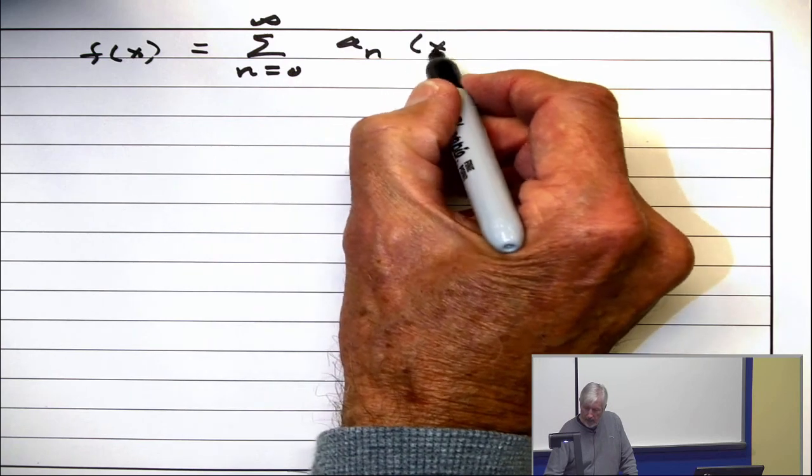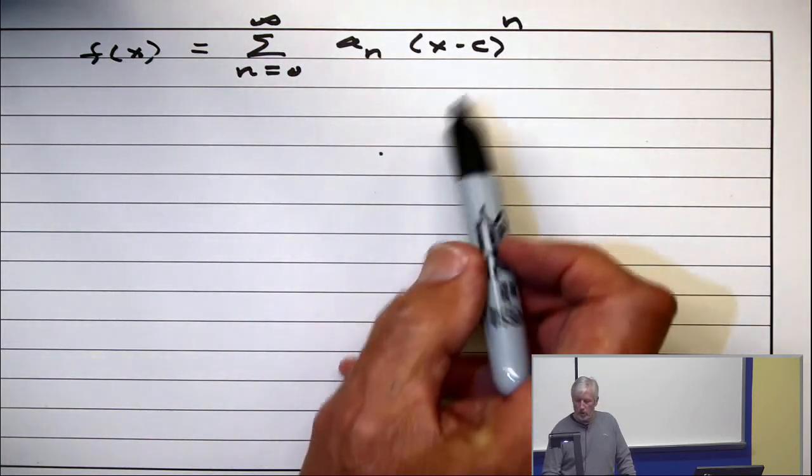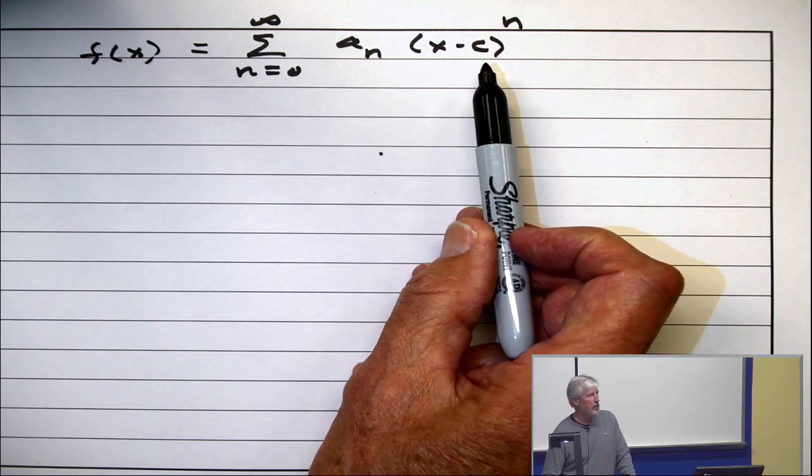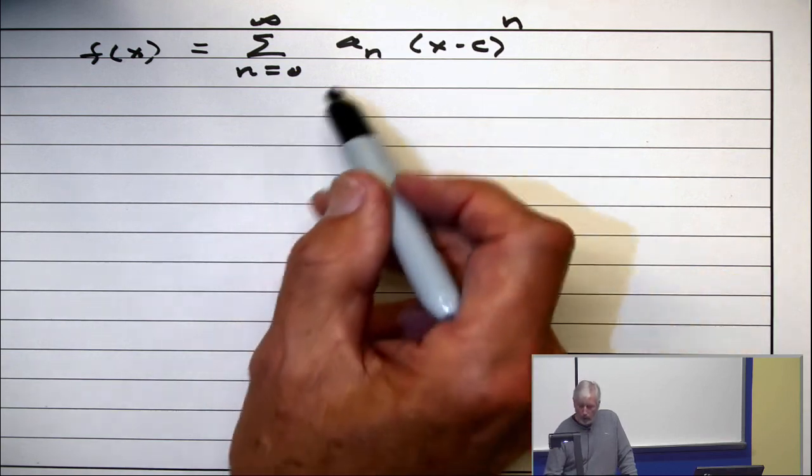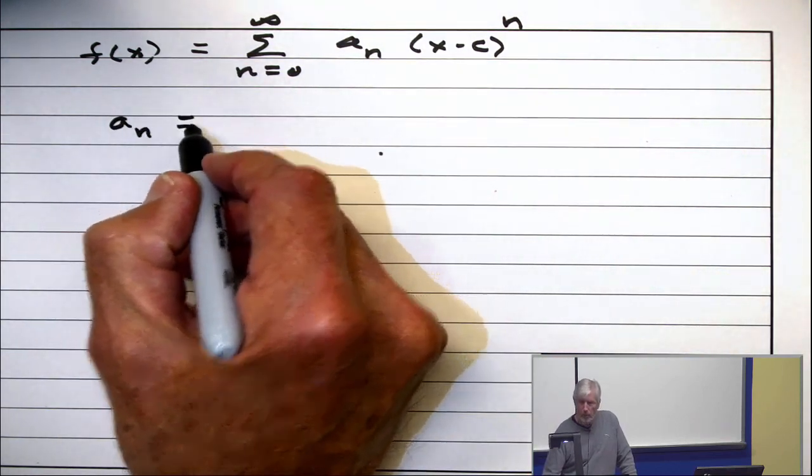So this is a Taylor series expansion about the point x equals c. Okay, now, what is the formula for a_n? Do you remember it?